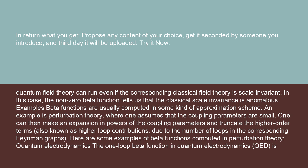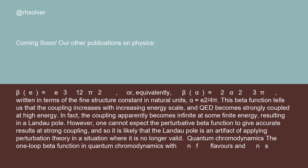Here are some examples of beta functions computed in perturbation theory. Quantum electrodynamics: the one-loop beta function in quantum electrodynamics (QED) is β(e) = e³/(12π²), or equivalently β(α) = 2α²/(3π), written in terms of the fine structure constant in natural units, α = e²/(4π).